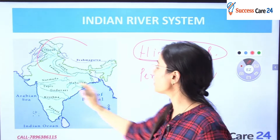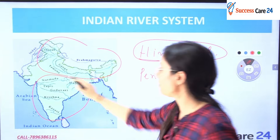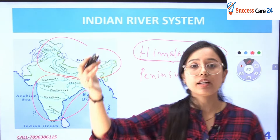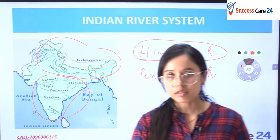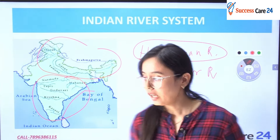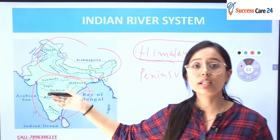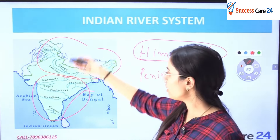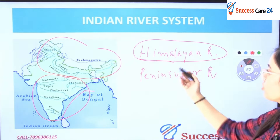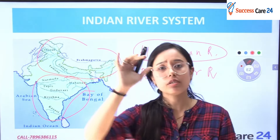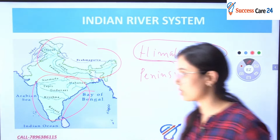The Himalayan rivers originate from the Himalayas. For the Peninsular River System, 'peninsular' means the land body where three sides are covered by water — that is South India. Rivers originating there are called Peninsular Rivers, and those from the Himalayas are Himalayan Rivers. There are some major differences you should know before going into the names of the rivers.